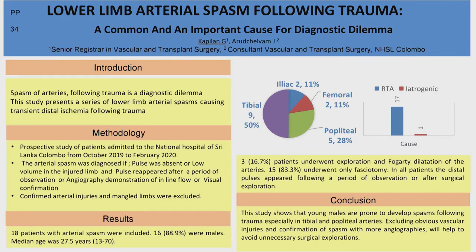We studied spasms of the arteries in the lower limb following trauma. This study presents a series of cases admitted to the National Hospital of Sri Lanka, Colombo. The duration of this study was from October 2019 to February 2020. It is a prospective study of patients admitted to this hospital. Our criteria to diagnose arterial spasms was if the pulse was absent, if there was a low volume pulse in the injured limb, or if a pulse reappeared after observation or after confirmation of intact vessels by angiography or surgical exploration.